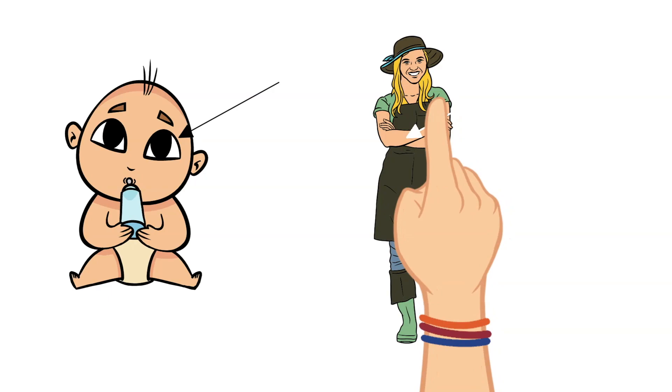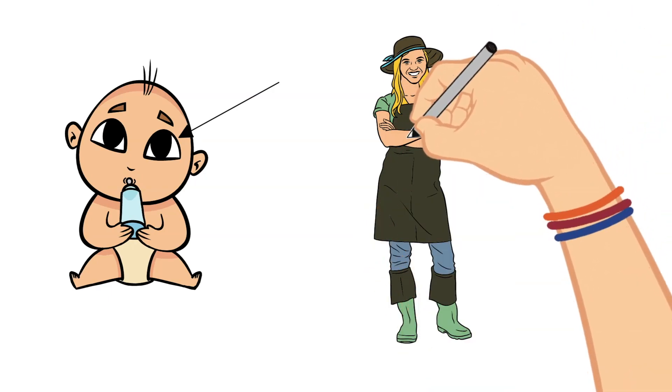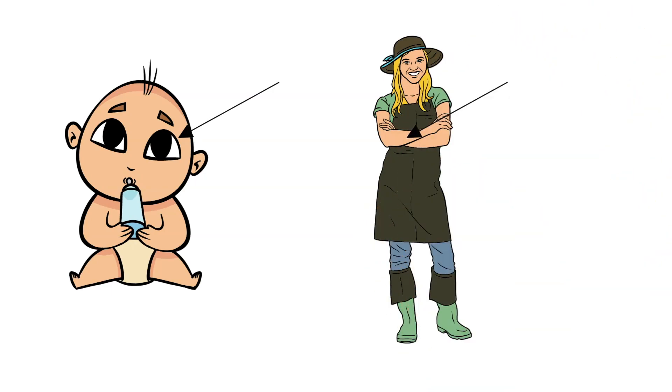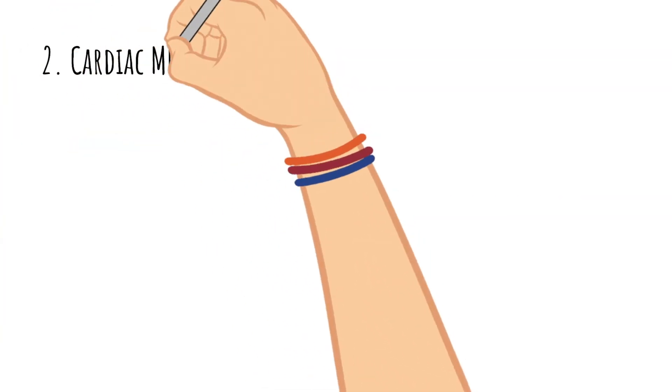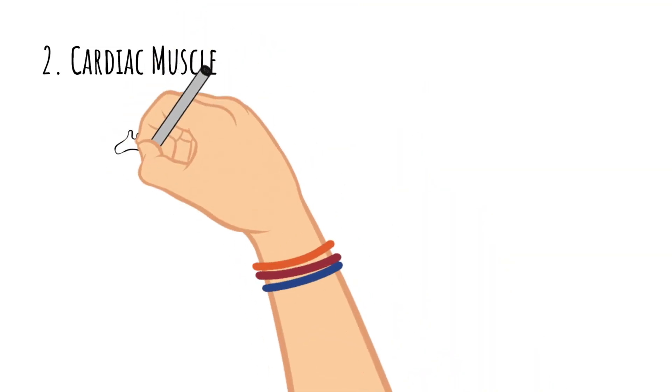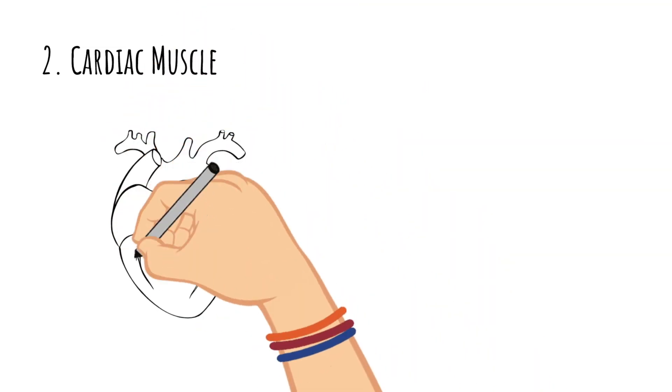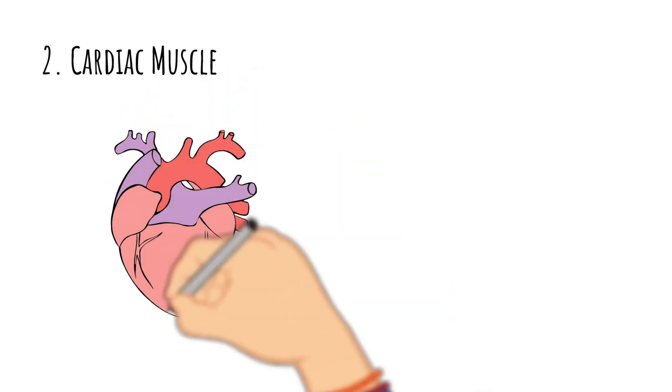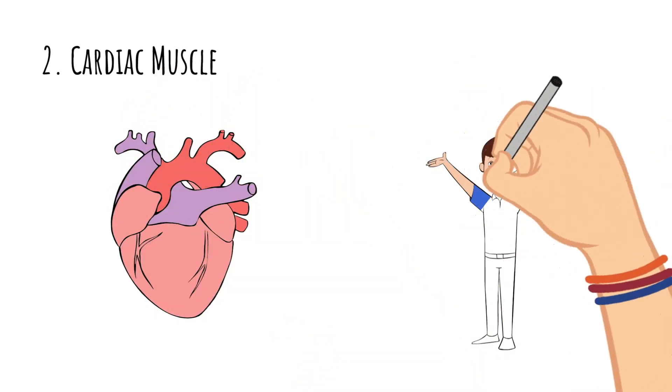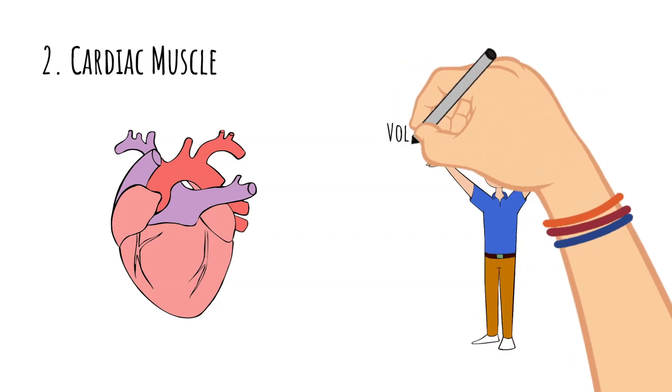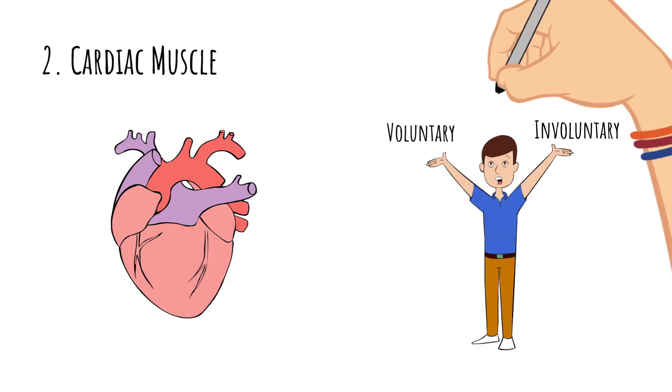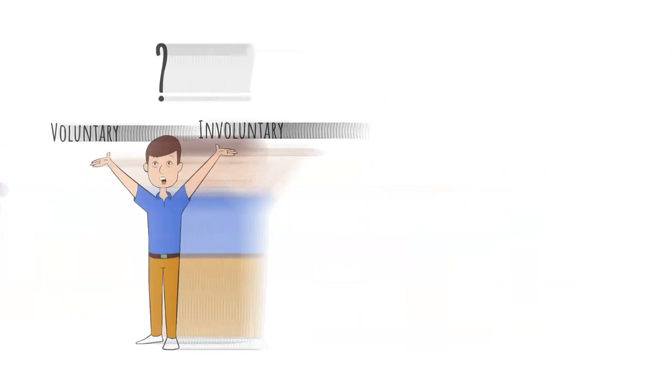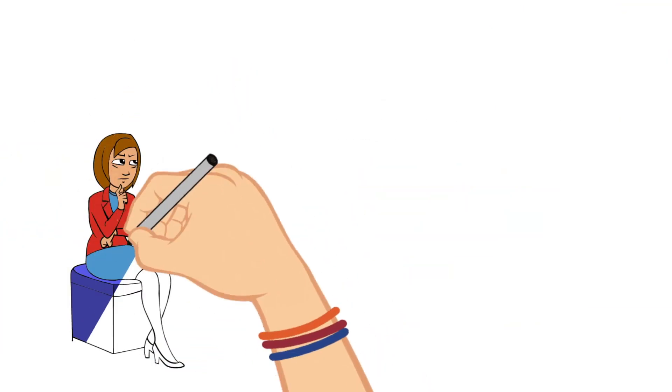The second type of muscle in your body is the cardiac muscle. This is the muscle that makes up the heart. Let's think about this to determine whether or not the cardiac muscle is involuntary or voluntary. Can you think to make your heart beat? If you want it to beat faster, can you make it do so by just thinking about it? The answer is, of course, no.